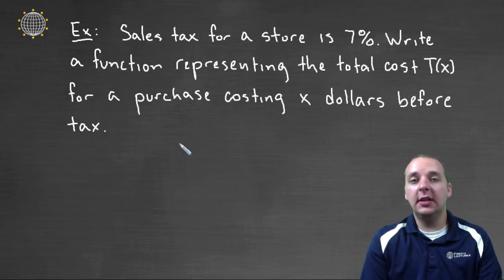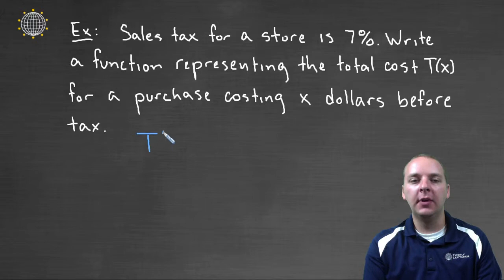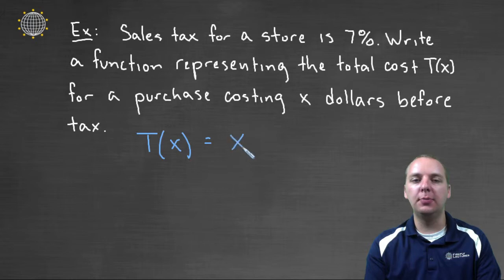So let's think about it. What would this function need to do? The total cost if we were going to buy some shirts and pants that cost X dollars would need to take the price of those shirts and pants and add on top of that the sales tax.